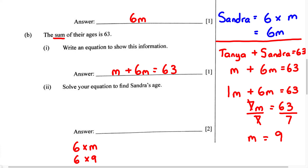When we solve for this, 6 times 9 is going to give us 54. So this is going to be our answer, and we write our answer in the space provided. We know Sandra's age is going to be 54.